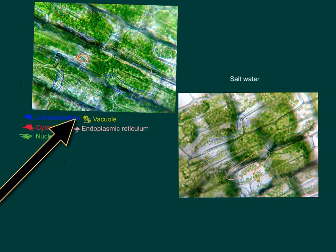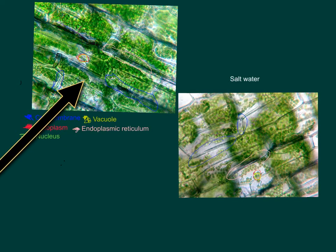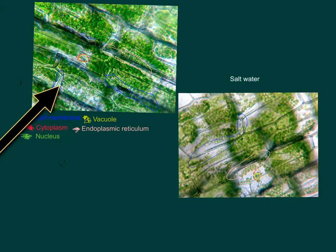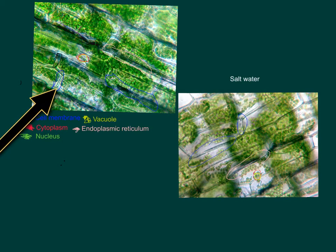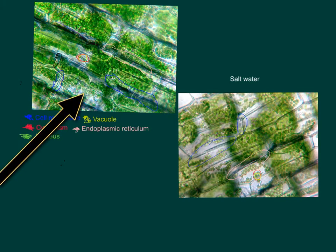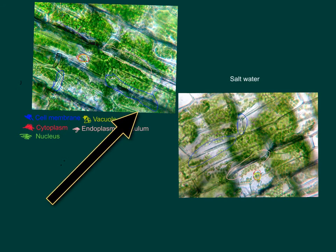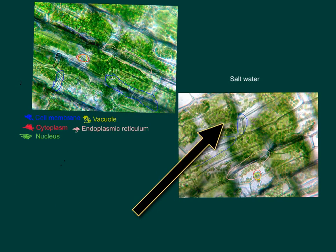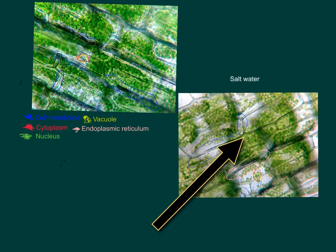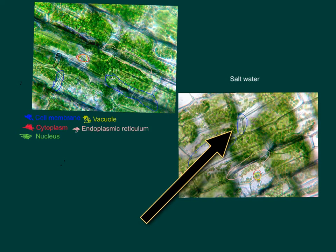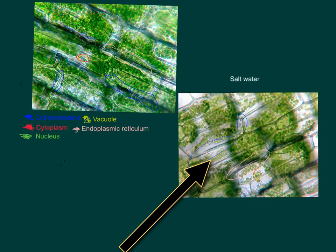So I'm going to tell you what everything does, so let's start with the cell membrane. Like the skin covering our bodies, this membrane surrounds, protects, and controls the contents of the cell. Its structure helps control how substances enter and exit the cell.